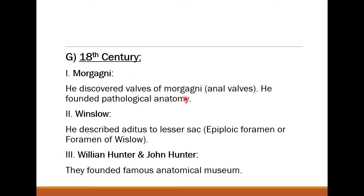In the 18th century, Morgagni discovered the valves of Morgagni (anal valves) in the anal canal and founded pathological anatomy, describing diseases associated with anatomical structures. Winslow described the epiploic foramen (foramen of Winslow) — an opening through which the epiploic artery and vein pass toward the stomach. William Hunter and John Hunter founded a famous anatomical museum.